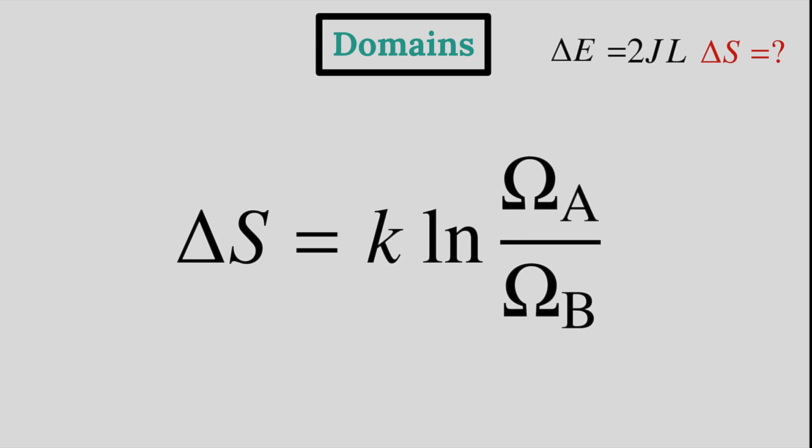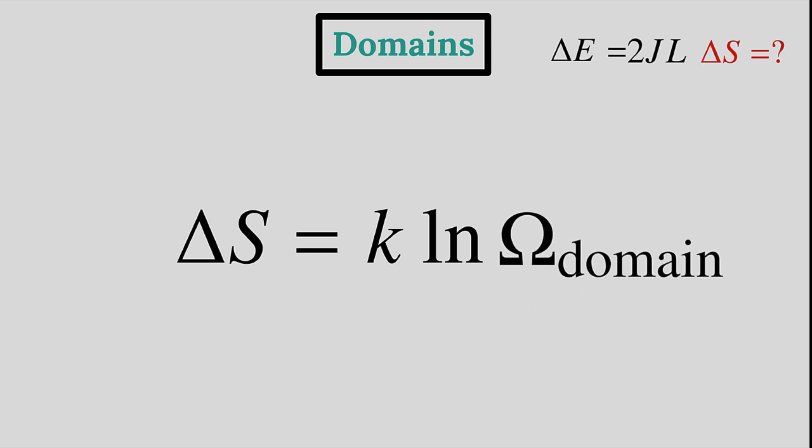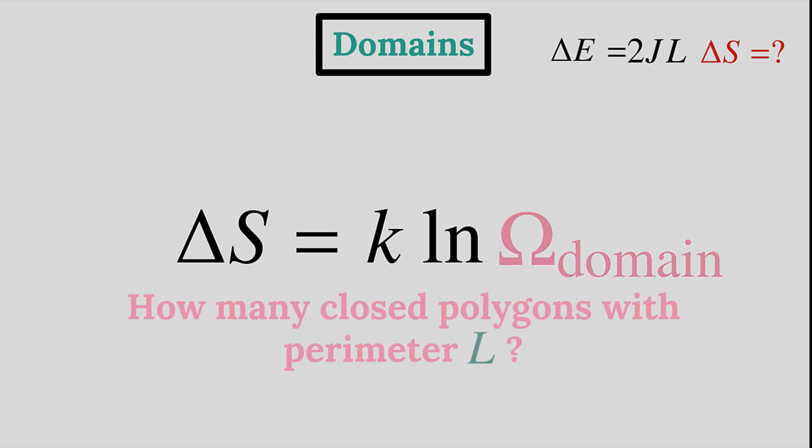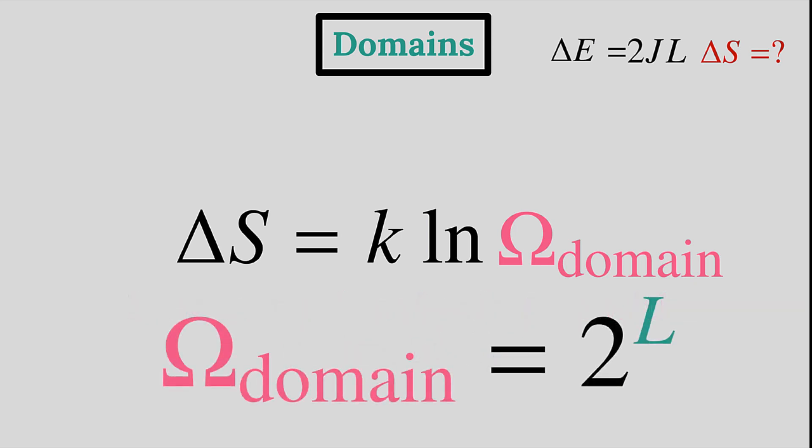Now we only need to calculate this fraction, omega A over omega B, which is the multiplicity of creating a new domain of perimeter L. This is tantamount to counting the number of possible ways in which we can draw a closed polygon of perimeter L on the given lattice. It turns out that omega is equal to 2 to the L.